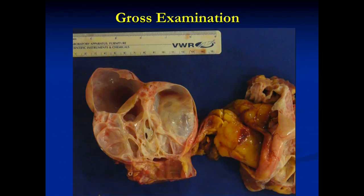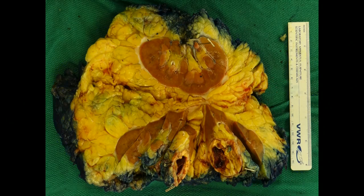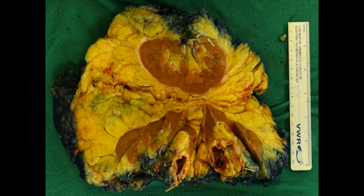A very important part of gross examination, other than consistency, is the size of the tumor, because the TNM staging is partly determined by the actual tumor size, measured macroscopically. Here's an example where a tumor is roughly 10 centimeters. Another patient's tumor may look completely different — more of a golden yellow color with areas of hemorrhage, which is characteristic of clear cell renal cell carcinoma. Gross examination helps us formulate a differential diagnosis.